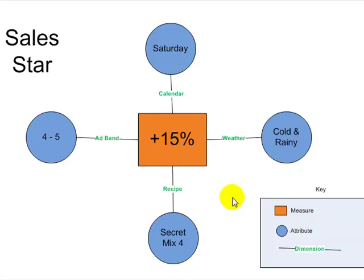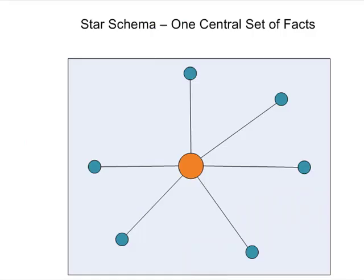So from a high level, you can see what a star schema represents: one central set of facts and then one set of dimensions that are sharing those facts. Star schemas can be compared to the OLTP many-to-many relationship.